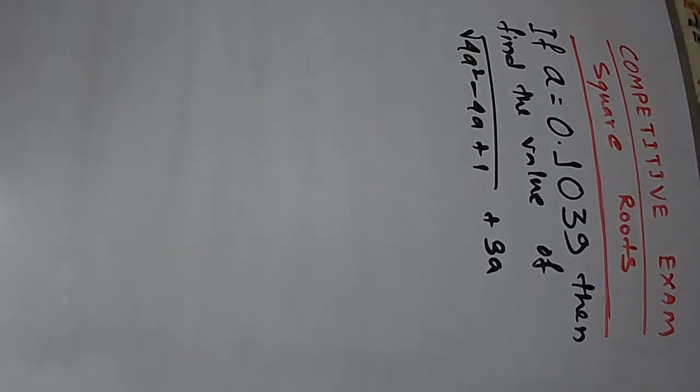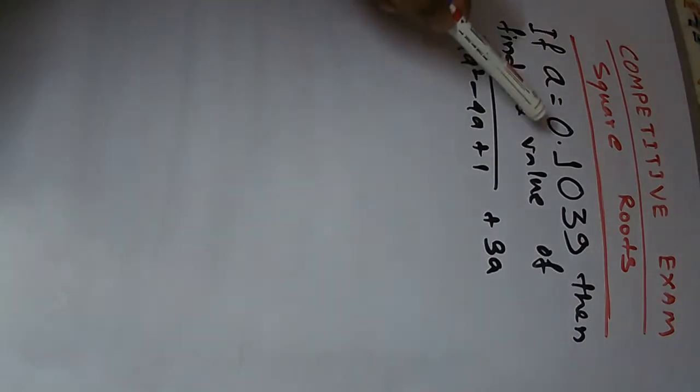Hello. If a equals 0.1039, then find the value of root 4a squared minus 4a plus 1 plus 3.